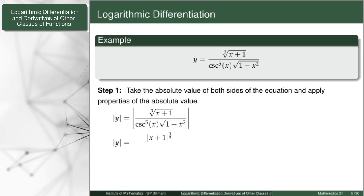I will write it as the absolute value of the base to some exponent, as I will need this exponent later on. I can distribute the absolute value over the denominator, writing the next term as the absolute value of cosecant x to the fifth, and the last term as the absolute value of (1 minus x squared) to the one-half. I should know when to stop — for example, at absolute value of (x+1) — as I cannot distribute the absolute value over sums and differences. I only distribute over products, quotients, and powers.